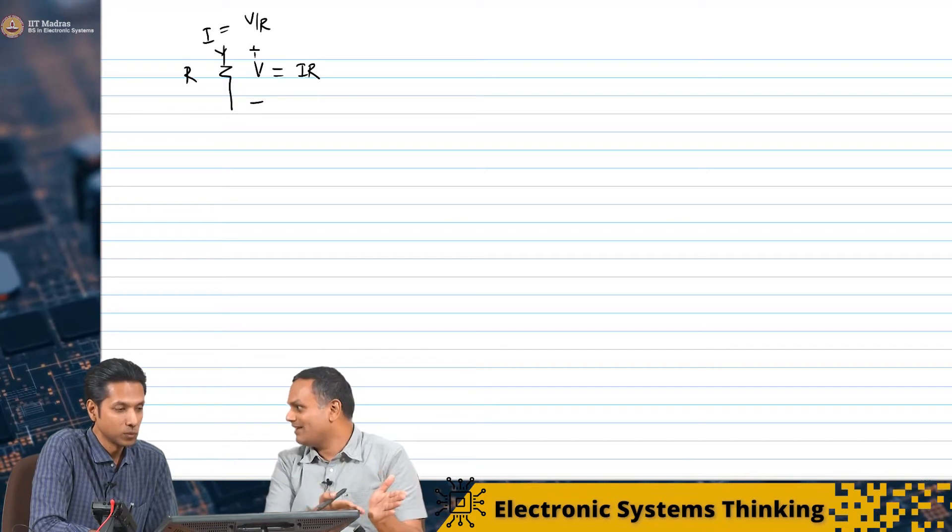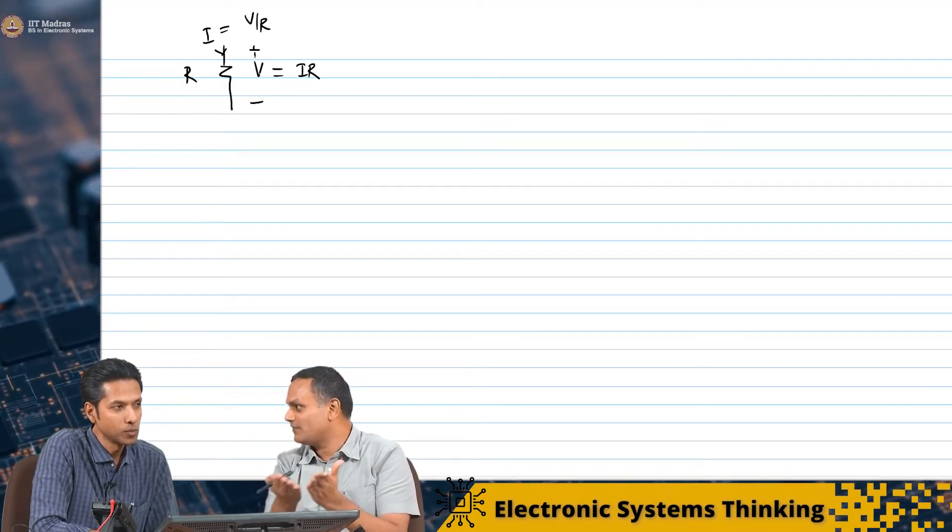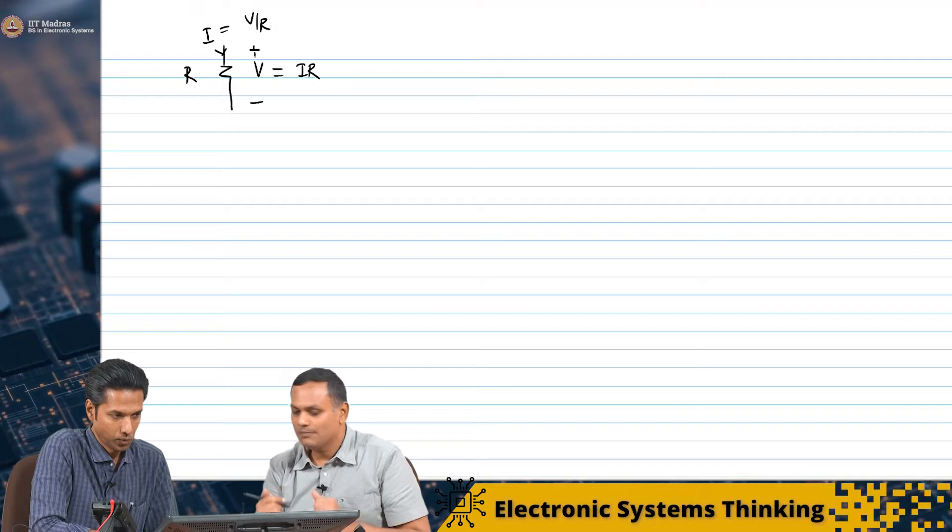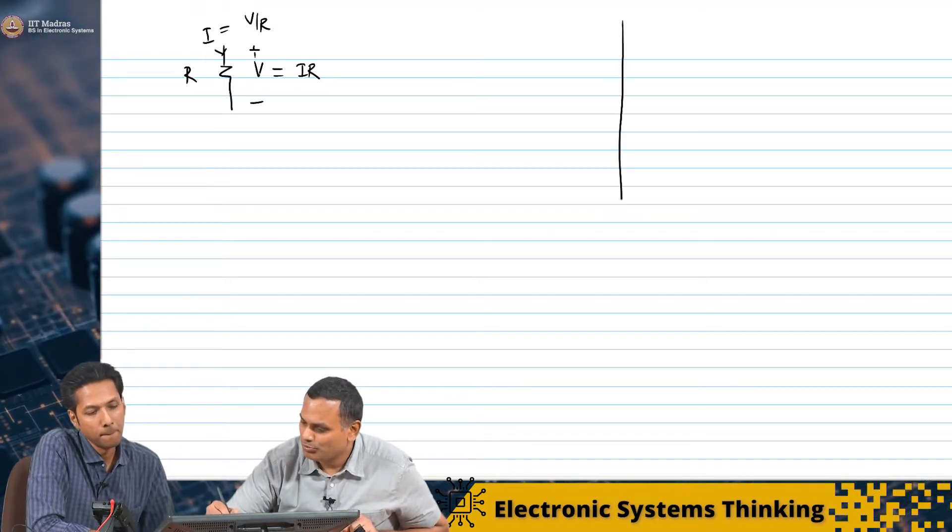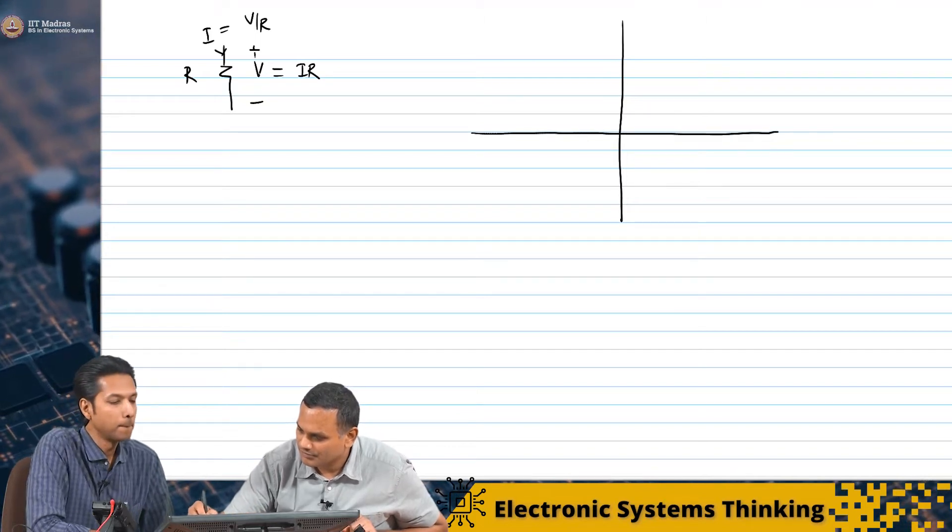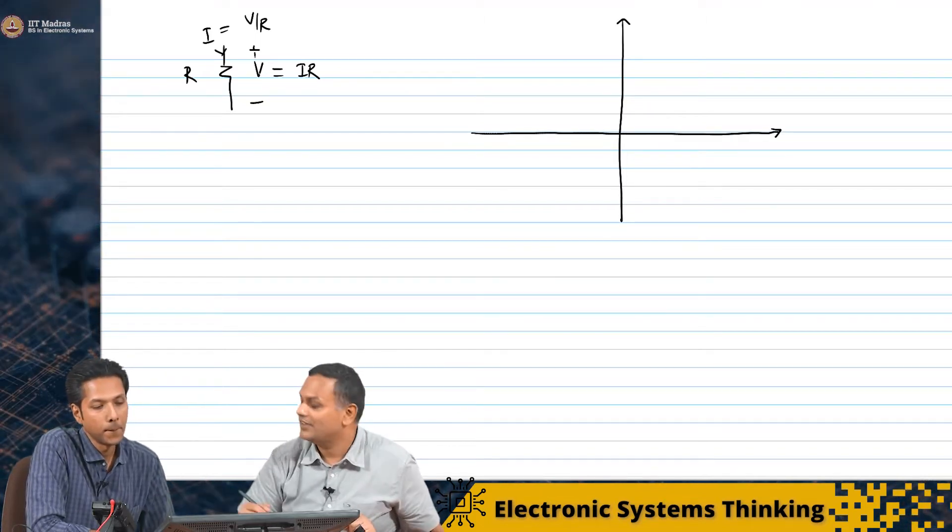Now, I am going to take from the example that we did - we connected a voltage source V across a resistance R. What I am going to do is plot the characteristics of the resistance.